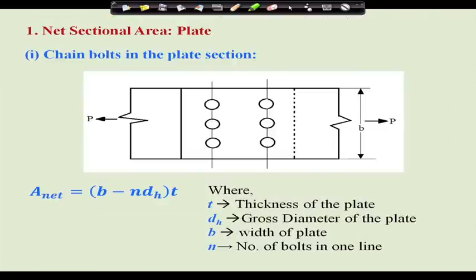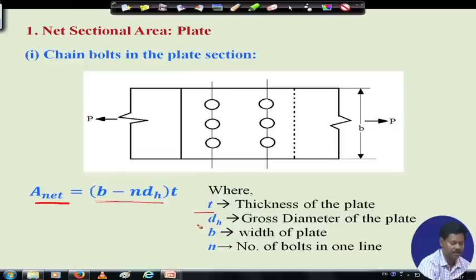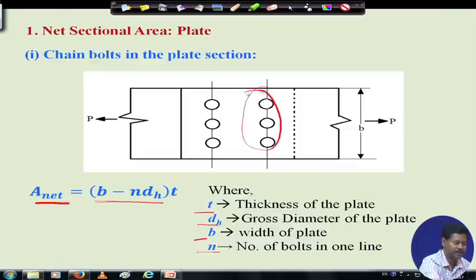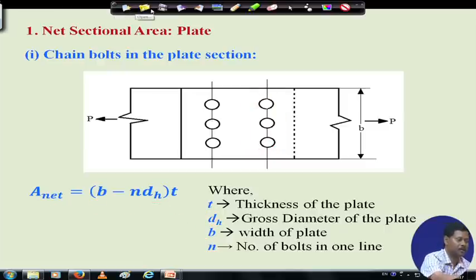To summarize what has been discussed, the net area N_A can be calculated as (B − N × D_H) × T, where T is the thickness of the plate, D_H is the gross diameter of the hole, B is the width of the plate, and N is the number of bolts in one line. For chain bolting, the net area is simply gross area (B × T) minus hole area (N × D_H × T). The problem arises when we have to calculate the net area for zigzag bolting.